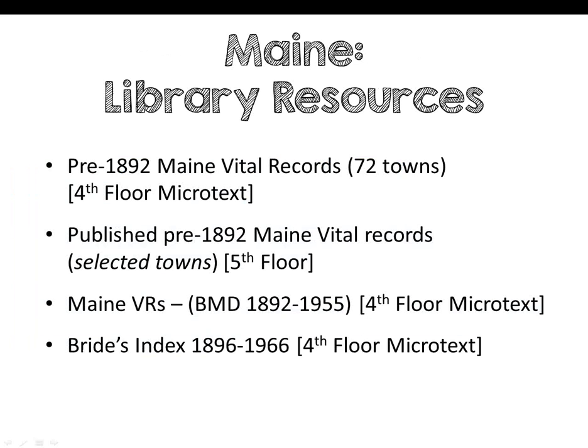At NEHGS we have other resources for Maine, including microfilm of the returns of pre-1892 vital records for the 72 towns, and a variety of individual rolls of microfilm and pre-1892 vital records published in book form for specific towns. The books are on the fifth floor and all microfilms are on the fourth floor. For recent vital records, we have statewide Maine vital records from 1892 to 1955, and a bride index covering 1896 to 1966 on microfilm — valuable because the straight vital records only list down through the groom's name.